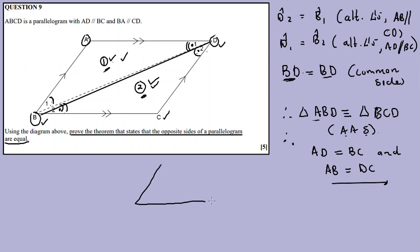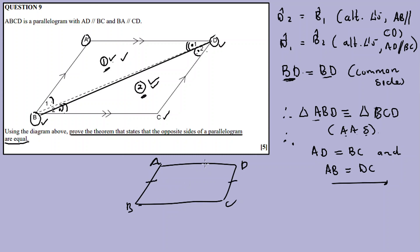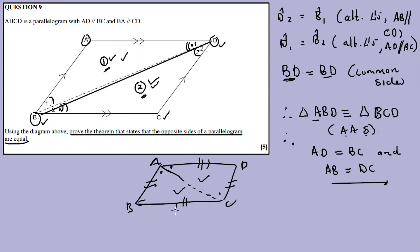If you are given a parallelogram like this with vertices A, B, C, D, you need to construct a diagonal before you can prove it. The construction doesn't have to be drawn in this direction only — you can also draw your construction line the other way. Either way, the common side is proved and the triangles are congruent, therefore the opposite sides are equal.